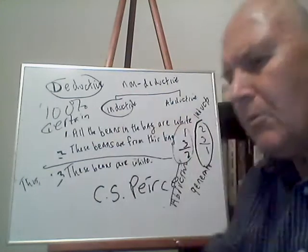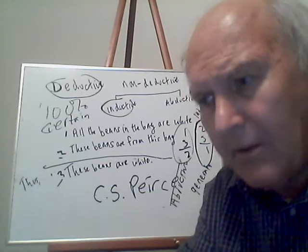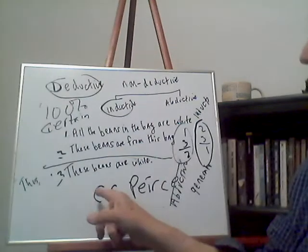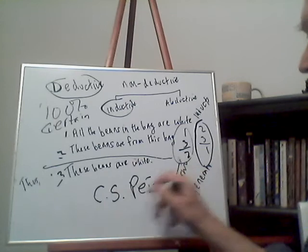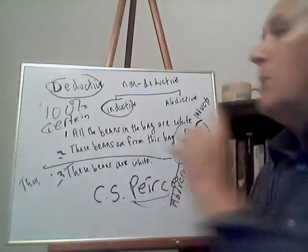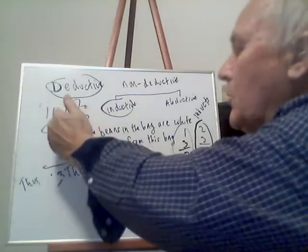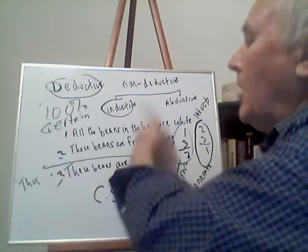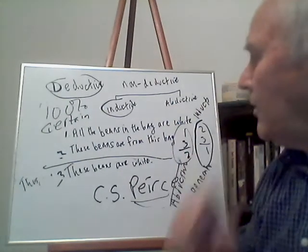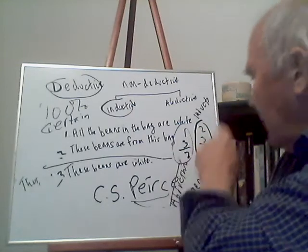So that's your homework assignment — actually memorize all three forms of this argument. Be able to go through the different ways the argument can be arranged, because the statements are all the same: one-two-three, one-three-two, and two-three-one. Make sure you understand why the first is deductive, why the second is abductive, and why the third is inductive.